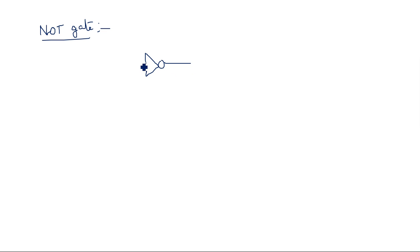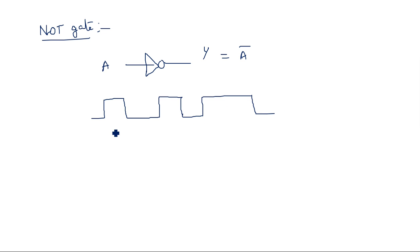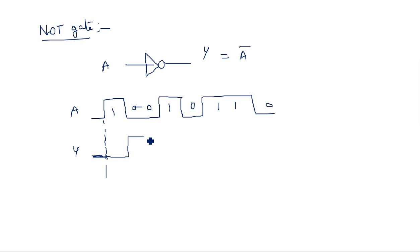For the NOT gate we have only one input. NOT gate is a single input, single output gate. A goes in and Y equals A complement comes out. Suppose input is one zero zero zero zero zero one zero one one — so one zero zero one zero one one zero. Y is the complement: when input is one, output is zero; when input is zero, output is one. This output waveform is nothing but a complement of the input.